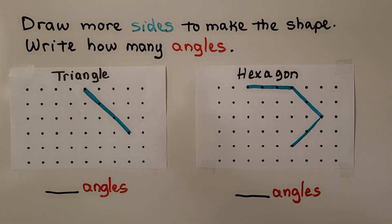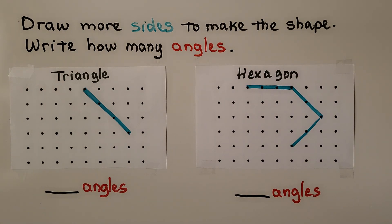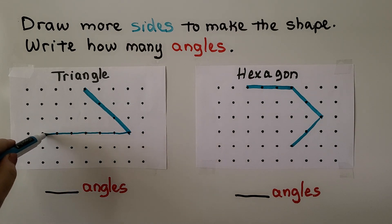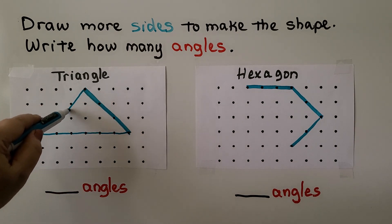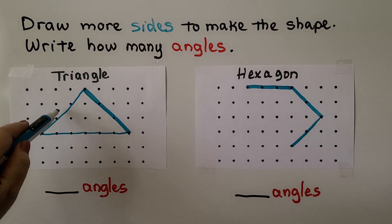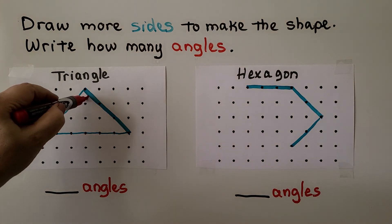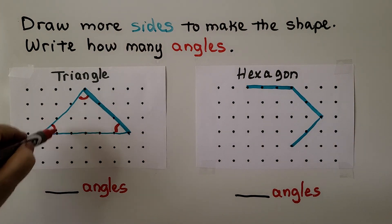Here it's telling us to draw more sides to make the shape and write how many angles. We need to make a triangle. A triangle has three sides, so it has three angles. We can give it three straight lines — it's already got one. We have one, two, three sides. And right here, we have one, two, three angles.